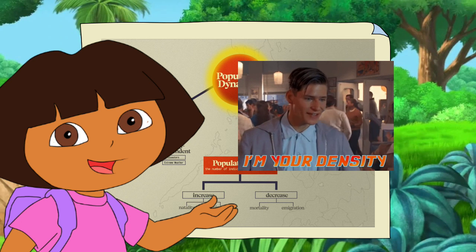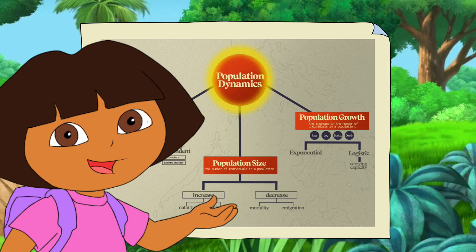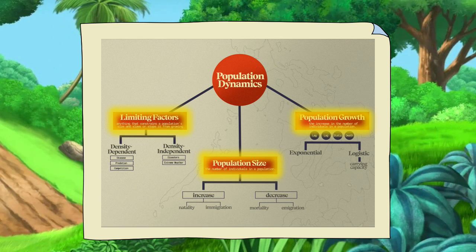In population dynamics, density is the result of a dynamic interplay between processes that add individuals to a population and those that remove individuals from it. Population dynamics has three parts: limiting factors, population size, and population growth.